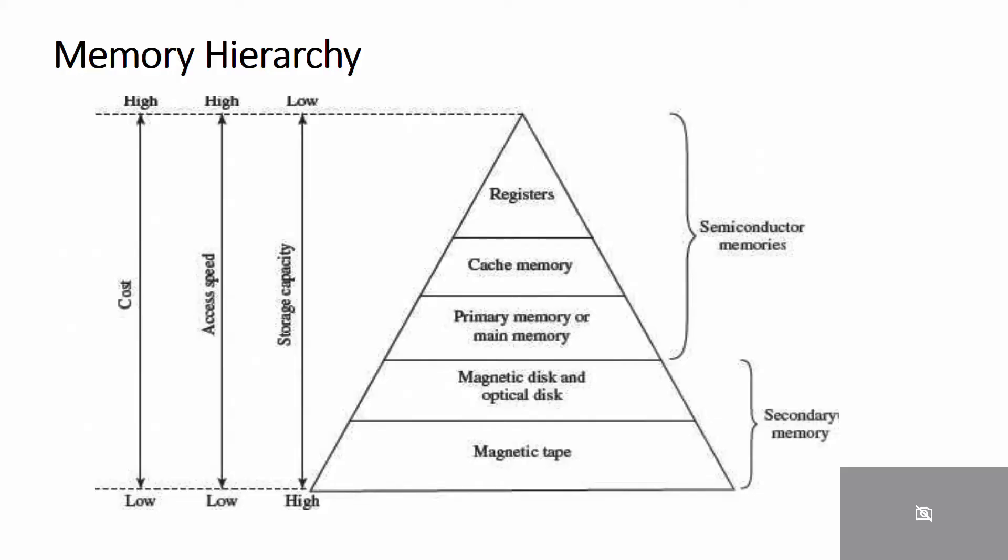The cache memory is used for storing segments of programs currently being executed in the CPU. The input/output processor manages data transfer between auxiliary memory and main memory.